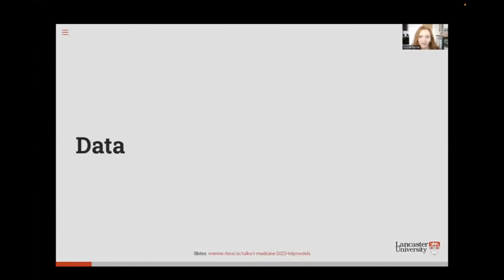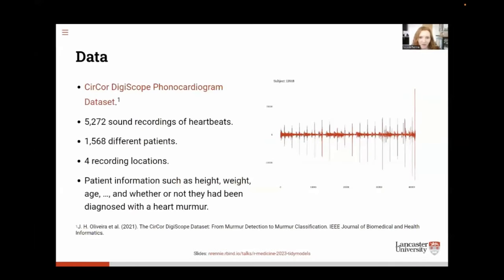So the first part of many data science projects is let's get some data. The data I was working with is a phonocardiogram signal data set. What this is is essentially sound recordings of heartbeats. And one of the reasons this type of data is collected is because phonocardiographs pick up sub audible sounds. So you get more information than if a human alone was to listen to a heartbeat. This data set has just over 5200 different recordings covering around 1500 people at four different recording locations, four different regions of the heart.